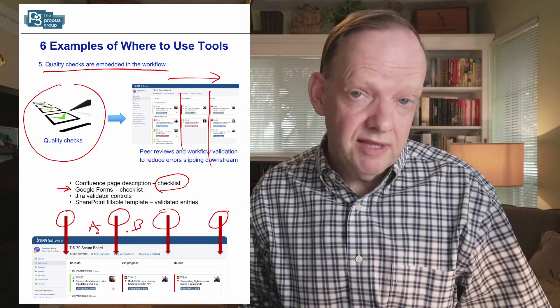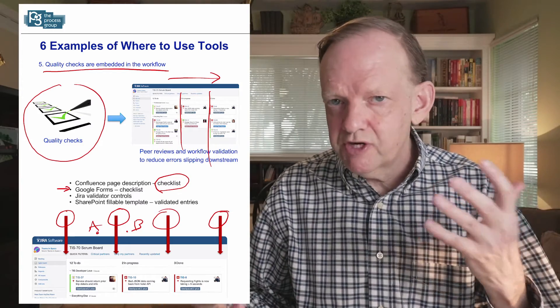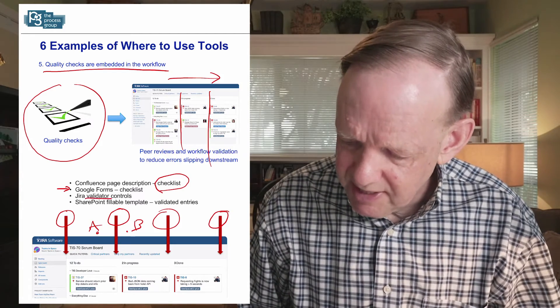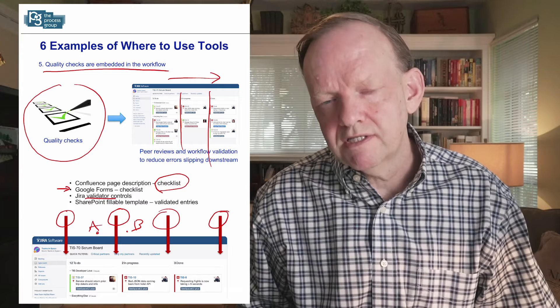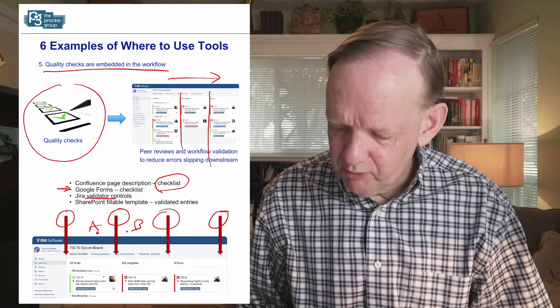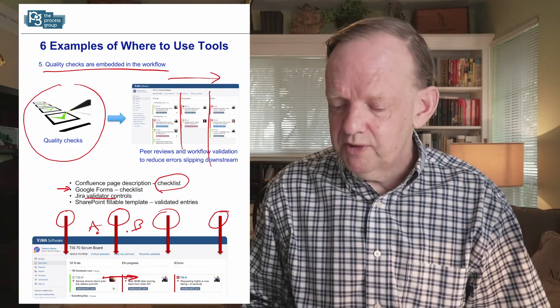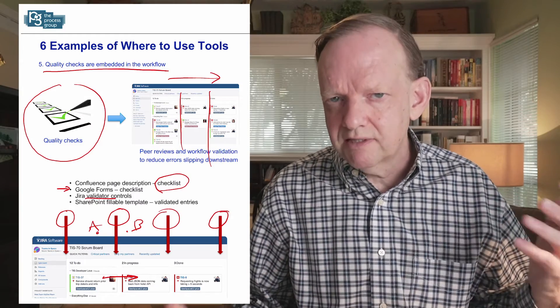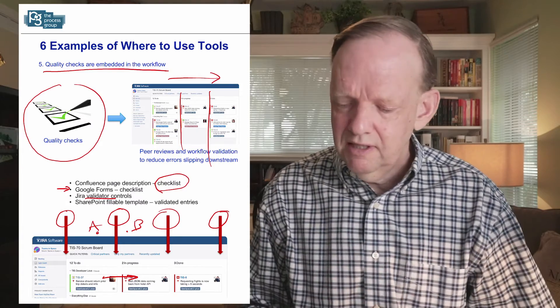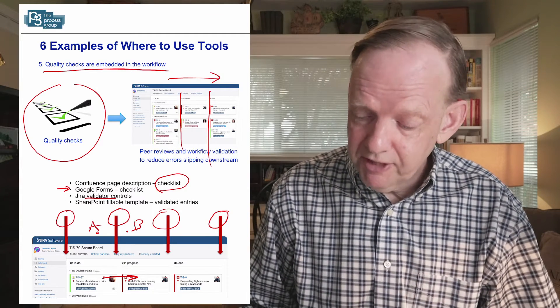Now we can get fancier than that. There are all kinds of controls you can put into the tool sets too. Now I'm going to refer to a Jira example here, but other tools have the same things. A validator basically is a software configuration point in the workflow where you can say stop here and don't allow you to go from this point to this point unless certain conditions have actually taken place. So if you look at the technical user guide to these tools, you may find some quality control controls you can put in place that basically help you remind the team of things they're going to look at.